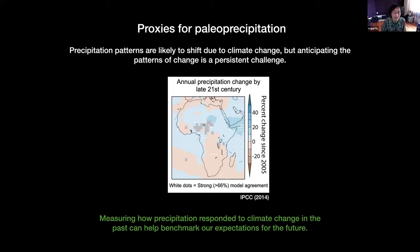Precipitation patterns are notoriously difficult to forecast. Unlike temperature, where there's a global budget and we know more greenhouse effect means that budget is going up, precipitation depends on how moisture is distributed and therefore wind pattern changes. This IPCC report on Africa later this century shows models predicting fairly large changes in precipitation — up to about 50% — but agreement between the models is hard to come by, as you can see from the small areas with white dots.